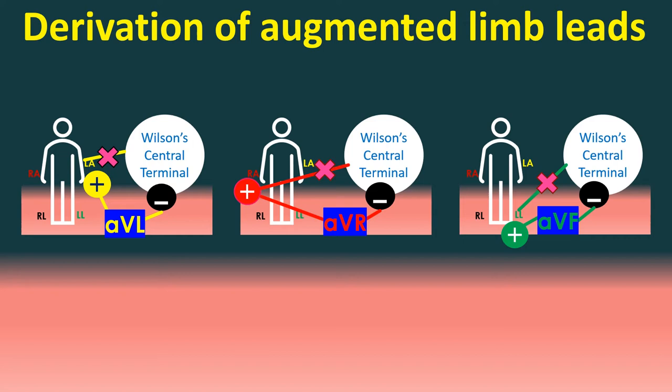Voltages of these recordings can be augmented by disconnecting the connection to the corresponding limb electrode from the central terminal, causing almost a 50% increase in the amplitude of the recordings. The augmented limb leads thus generated are called aVR, aVL, and aVF. Augmented limb leads were described by Goldberger in 1942.